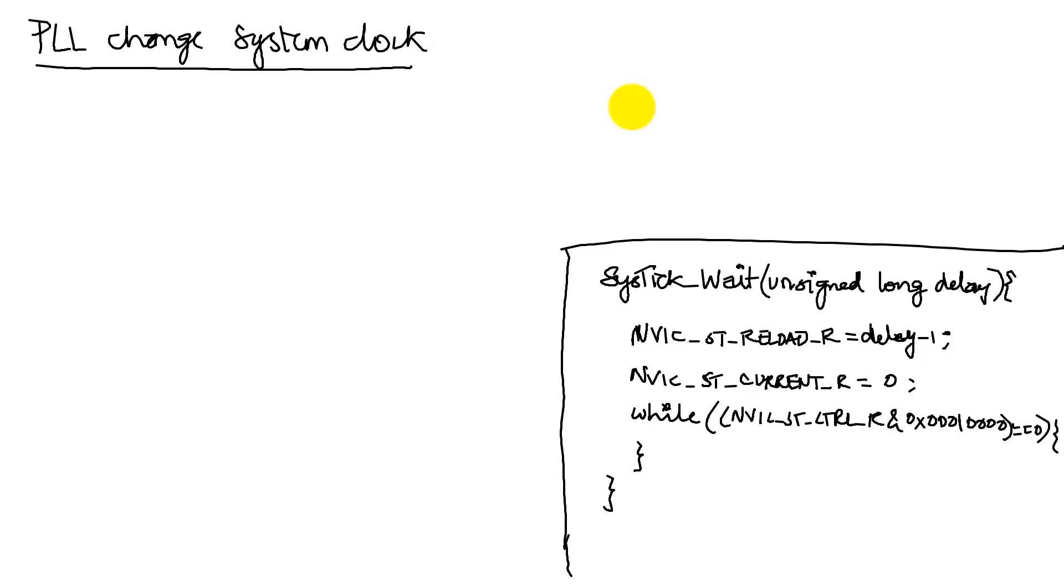Now, let's assume, let's do some calculations. Let's say we did set it at 80 megahertz. If I set it at 80 megahertz, then we know that a single clock...